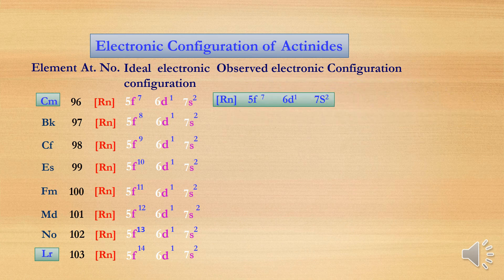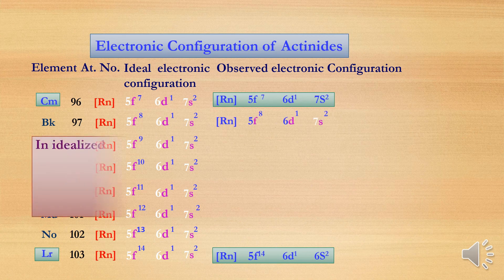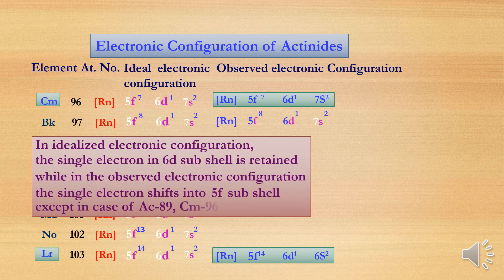Curium has one electron in 6d, seven electrons in the 5f orbital, and two electrons in 7s. In the ideal electronic configuration, the single electron in the 6d subshell is retained, but in the observed electronic configuration, that single electron shifts from 6d to 5f. So in the ideal configuration it stays in 6d, while in the observed configuration the 6d electron moves to the 5f orbital.